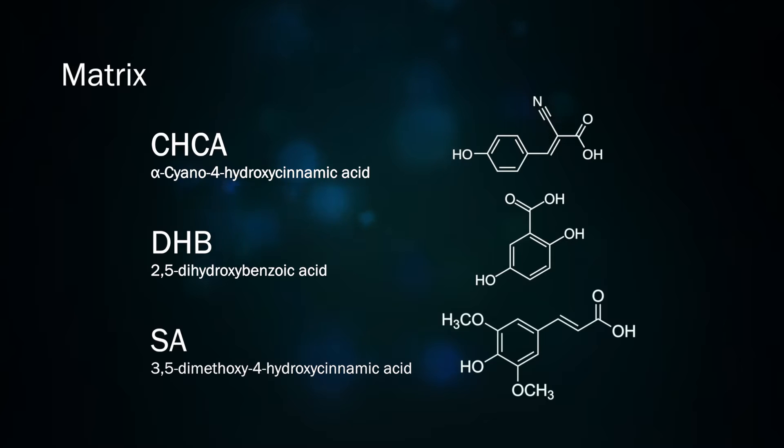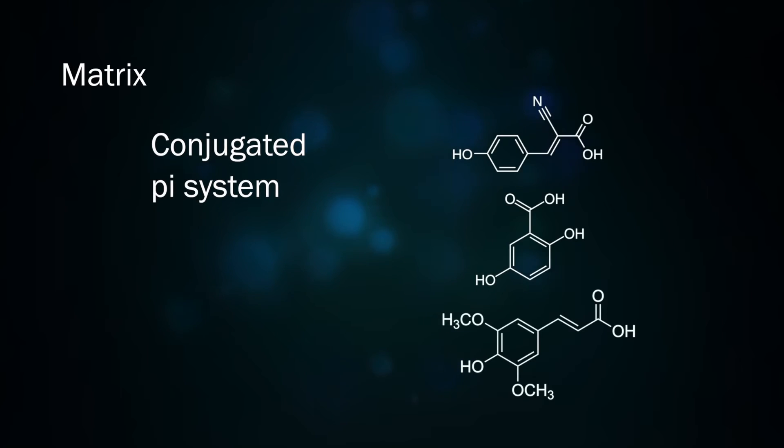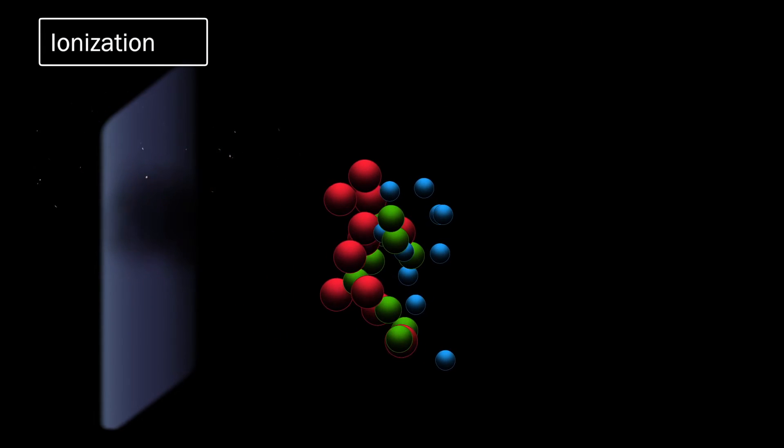Common to all matrix molecules is a conjugated pi system, like a benzene ring and attached functional groups. This conjugated pi system is able to absorb energy in the form of UV light and blast the analyte molecules into the gas phase.